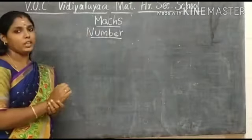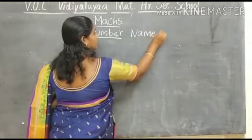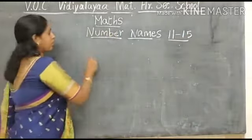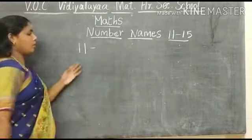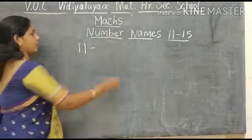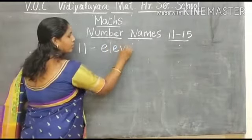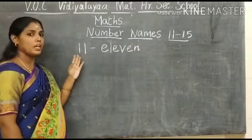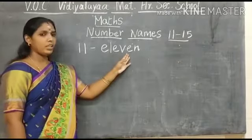Next we have to learn number names from 11 to 15. Ok children, I am going to write them, numbers 11 to 15. You have to repeat it, children. Number 11, what number is this? This is number 11. What is the spelling of number 11? E, L, E, V, E, N. 11.